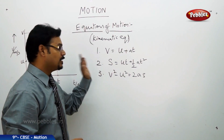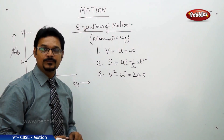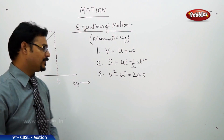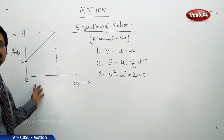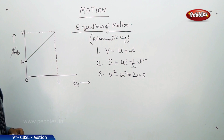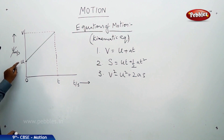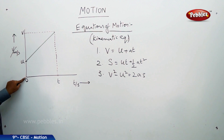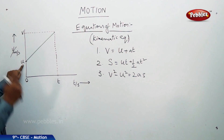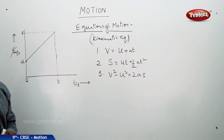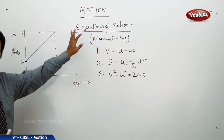I am going to derive these equations graphically using a v-t graph. If you see this v-t graph, a straight line is drawn. The straight line tells us that the body has some initial velocity u. If the line started from zero, we'd say the body starts from rest where v = 0. But here v starts at u, so the body has initial velocity u and reaches final velocity v in time t.